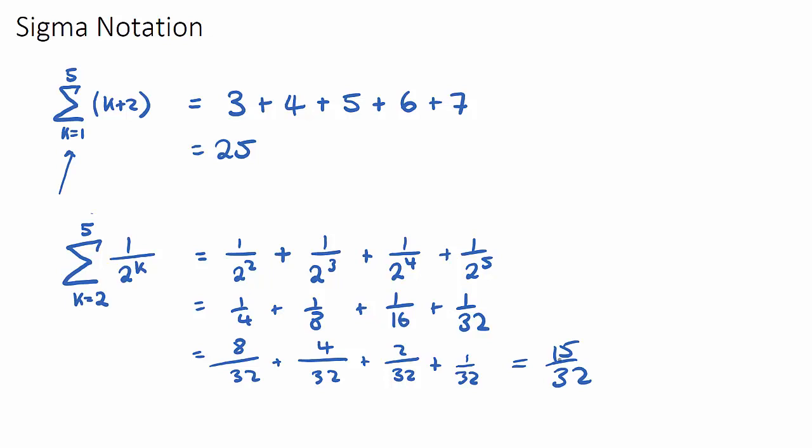So in IB questions, they do sometimes try and link sigma notation to arithmetic and geometric series questions. Because think about an arithmetic and geometric series, it's when we're summing up an amount of terms. And they might say, I want you to find the sum of the first five terms. And instead of asking that, they might actually write it in this format.